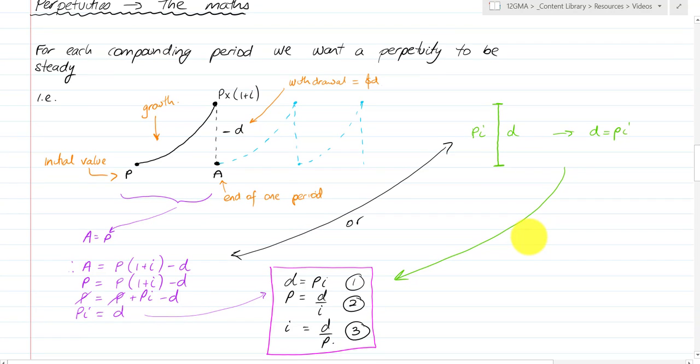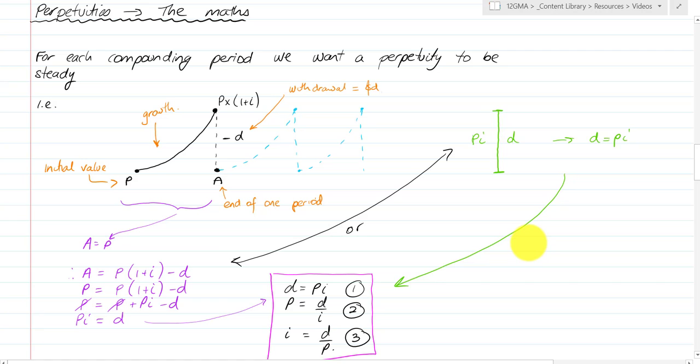For each compounding period, we want a perpetuity to be steady, to maintain its value. We start with an amount P, it gains interest over that time period, and then we subtract a withdrawal which we call D to get back down to the end of the period. Then we repeat this process, and our D should be the same every time.